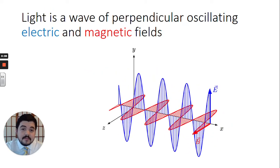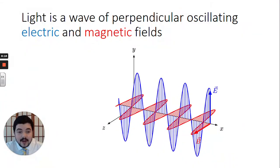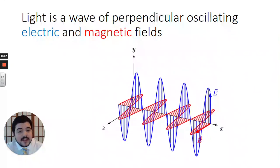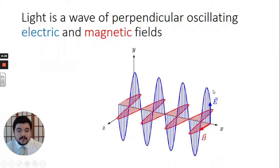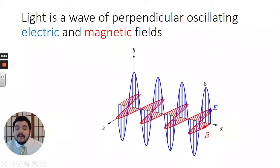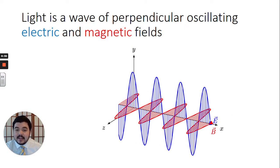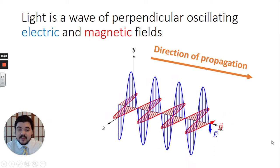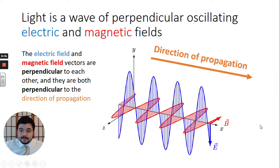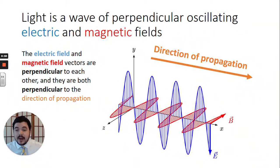Light is a wave of perpendicular oscillating electric and magnetic fields. We've got the blue sine wave that's in the xy plane representing an electric field. We can see the blue electric field vector oscillating up and down. And then perpendicular to that in the xz plane we have the oscillating magnetic field, and these two are all propagating forward in the x direction. So that's our direction of propagation. The electric field and magnetic field vectors are perpendicular to each other and they are perpendicular to the direction of propagation.